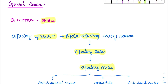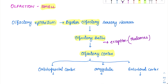One thing missing here is that usually everything goes to the thalamus, but here it does not go to the thalamus — it directly goes to the olfactory cortex. So the exception is that thalamus is not involved. A recent study says thalamus is involved, but for MCQ purposes, we consider that olfaction does not go through the thalamus.